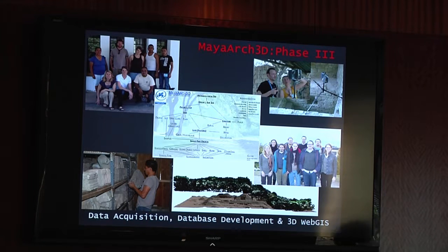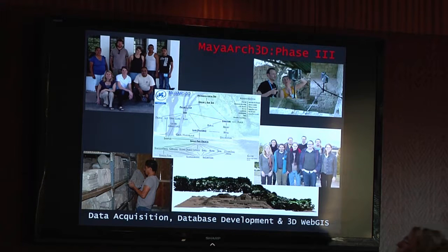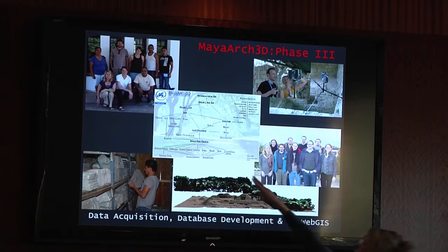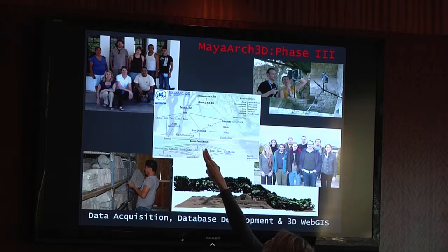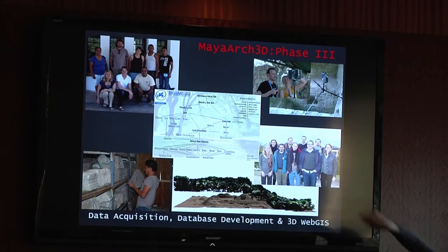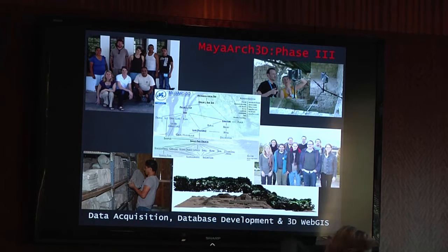The second component was expanding the database, which had been very small — just a few relational tables in a PostgreSQL open source database. We spent a lot of time revamping it, creating many more tables and setting up the links. The ones highlighted are those we actually have data in; others we set up as a system shell. The third component was developing a 3D web GIS tool to bring together the GIS and the 3D.